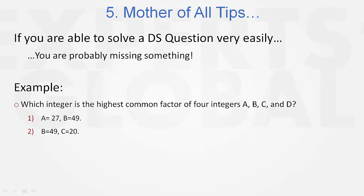Look deeper, find the catch. If you're not finding the catch and you're able to solve the question this easily, you are missing something. Let me solve this for you. We have to find the highest common factor of A, B, C, and D.